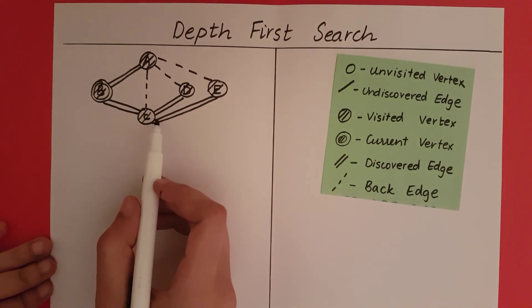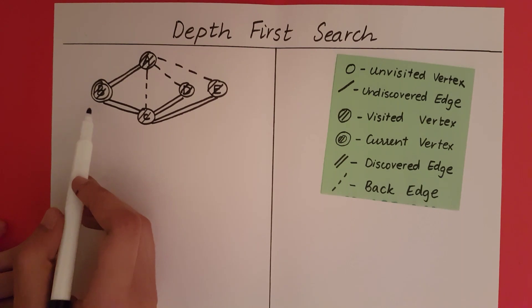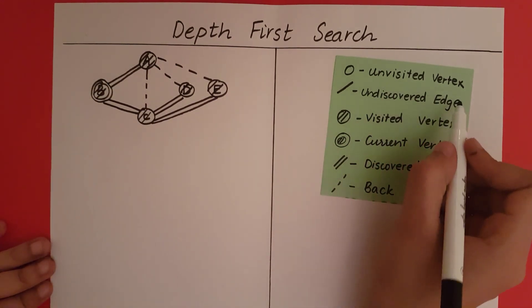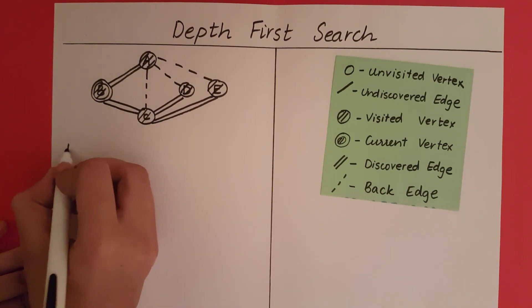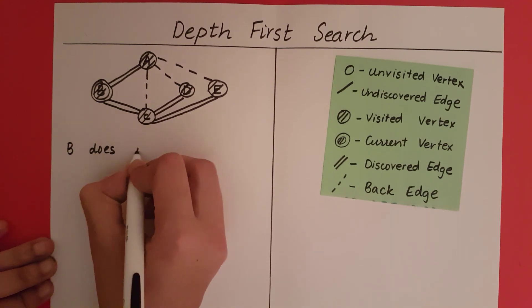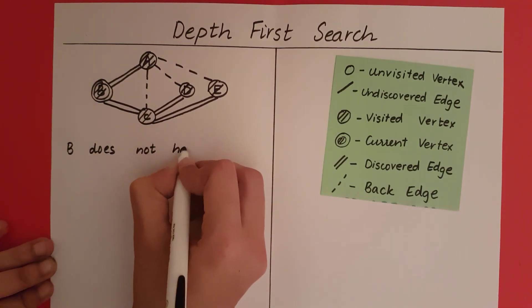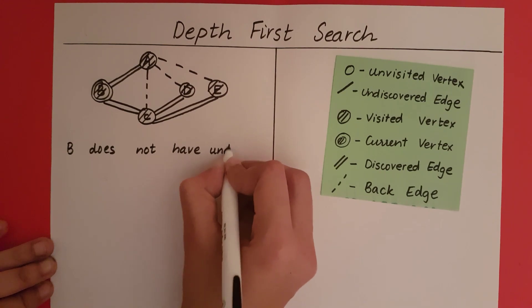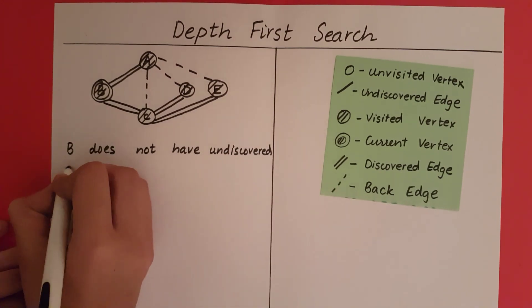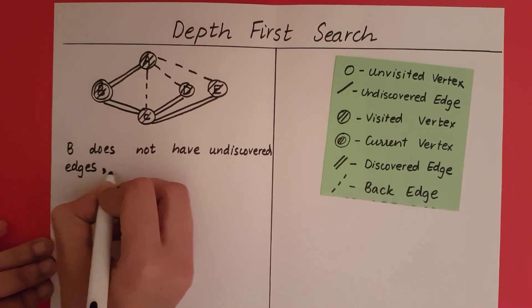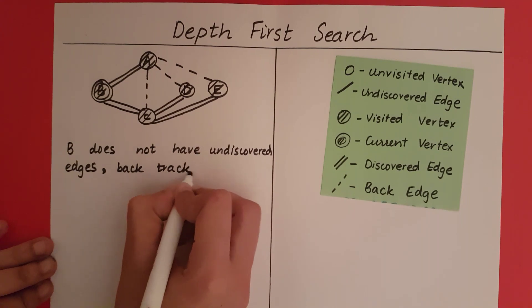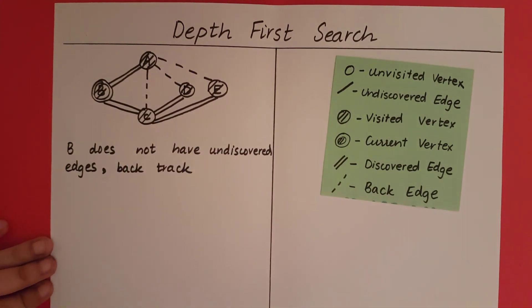This is what the graph looks like after we have backtracked from C to B. Now B becomes our current vertex. We search for any undiscovered edges — B does not have any undiscovered edges. So what must we do? We need to backtrack. What is the parent of B? The parent of B is A.